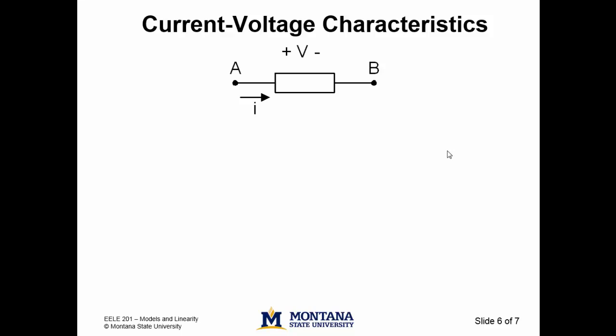Using our generic element, let's consider two common current voltage characteristics. It doesn't take much imagination to see that the current voltage characteristic on the left describes some linear element, whereas that on the right describes a nonlinear element. You may have seen these characteristics before. The one on the left might describe a resistor and the one on the right a diode.